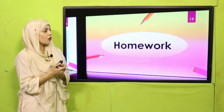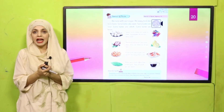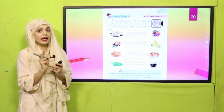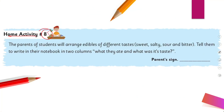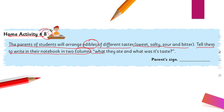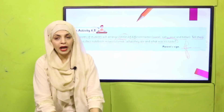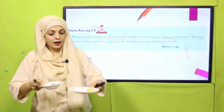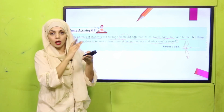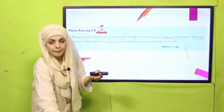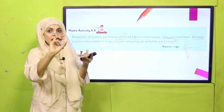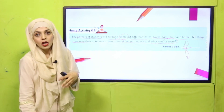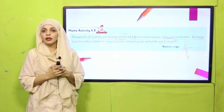Your homework is on page number 89, homework activity number 8. Parents will arrange edibles of different tastes — sweet, salty, sour, and bitter. Students will write in their notebook in two columns: what they ate and what its taste was. They should also get the activity signed. For example, if you tasted meatball, write meatball and its taste — salty. Finish this activity with your parents.